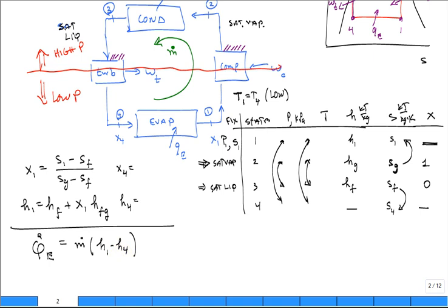Another question, how much work do I have to provide? What is the W dot net for the cycle? Well, it's going to be what goes in to drive the compressor minus you get a little bit out of the turbine for Carnot.